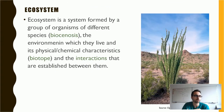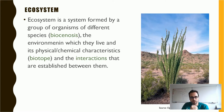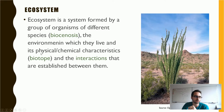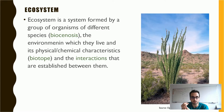An ecosystem is a system formed by a group of organisms of different species — this is called the biocenosis. The biocenosis, as we mentioned before, are the living organisms that belong to a specific ecosystem. The physical or chemical characteristics of the environment in which they live are considered the biotope. So for an ecosystem we consider: biocenosis (living beings), the biotope (physical or chemical characteristics), and also — and this is important not to forget — the interactions that are established between them.